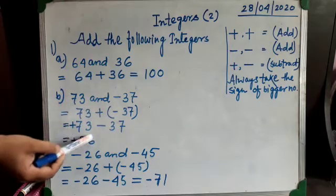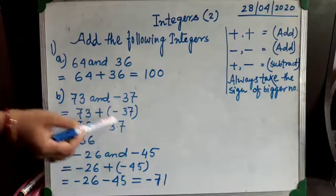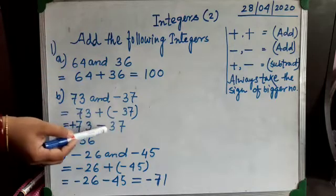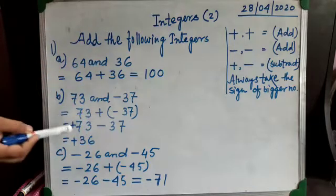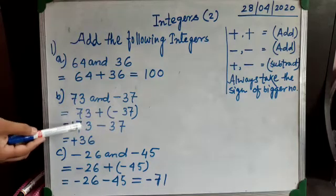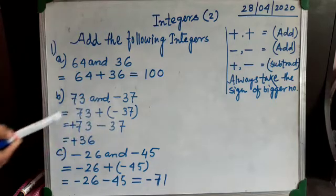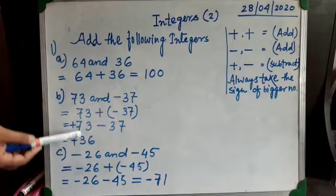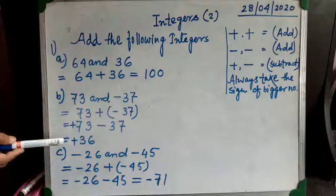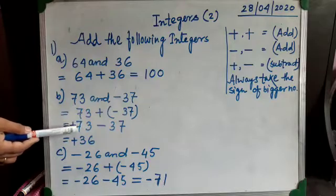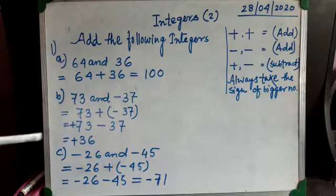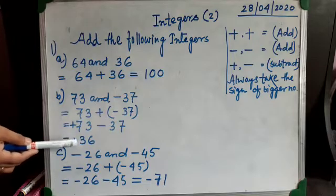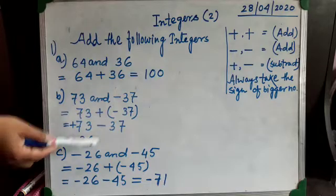One number is positive, another is negative. So, according to our rule, when both numbers have different signs we have to subtract them. Subtract normally in rough work — the answer is 36. Now it is time to put the sign: 73 is the bigger number, so I take its sign, and my answer is plus 36.